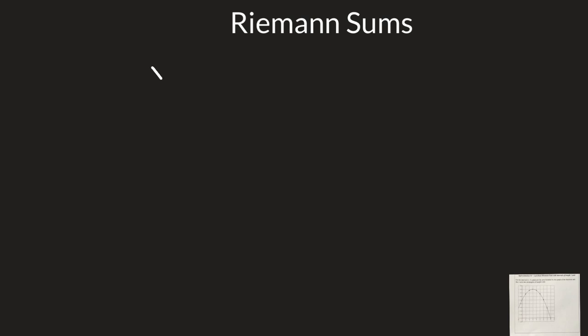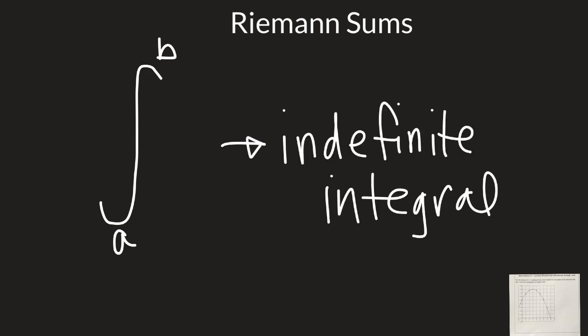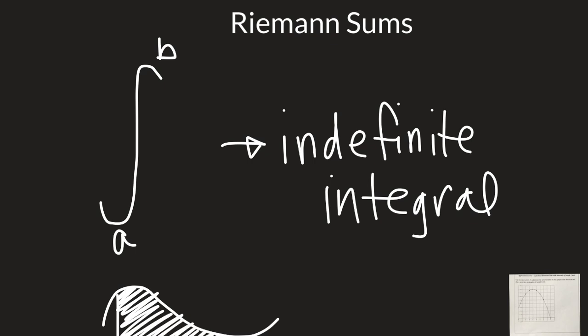In class today we're talking about finding the area underneath the curve using rectangles, left and right endpoints. This symbol is called an indefinite integral, and what it's asking you to do is find the area underneath some curve between the curve and the x-axis from point A to point B. There are lots of applications to this in calculus, including total distance traveled.